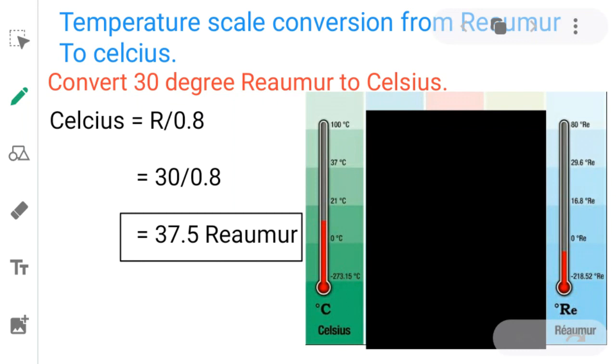You may observe in the diagram, the Celsius scale, the boiling point of water is 100 degrees, but in case of Reaumur, the boiling point is 80 degrees. The freezing point of water in Celsius is 0. In Reaumur also, the freezing point is 0.